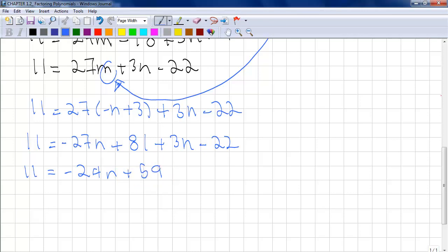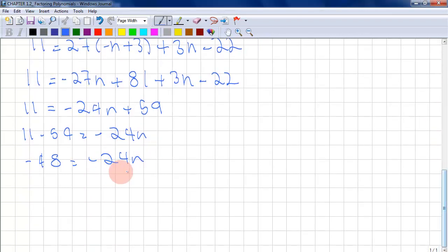So what we want to do is isolate the n to find the value of it. So we want to move the constants to the left side. We're going to say 11 - 59 equals -24n. So 11 - 59 is -48 equals -24n. Our last step is going to be dividing this whole equation by -24, which gives us n equals 2.